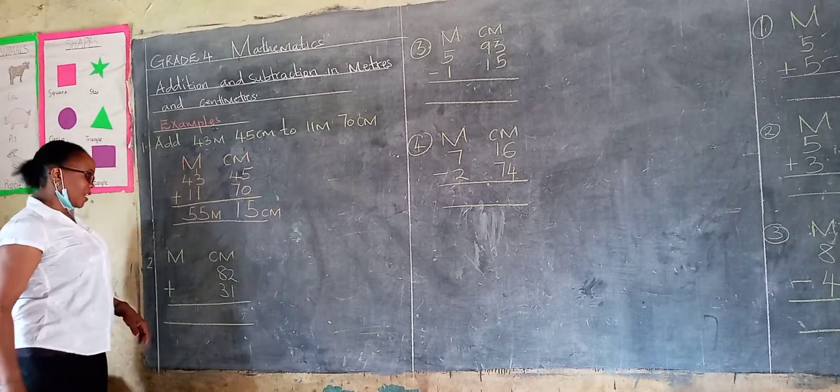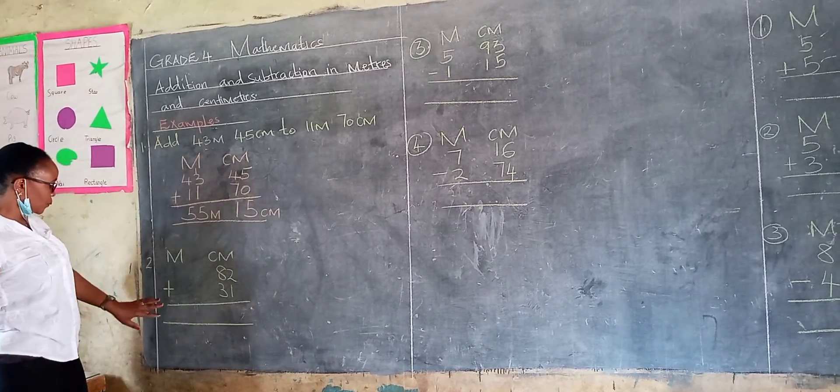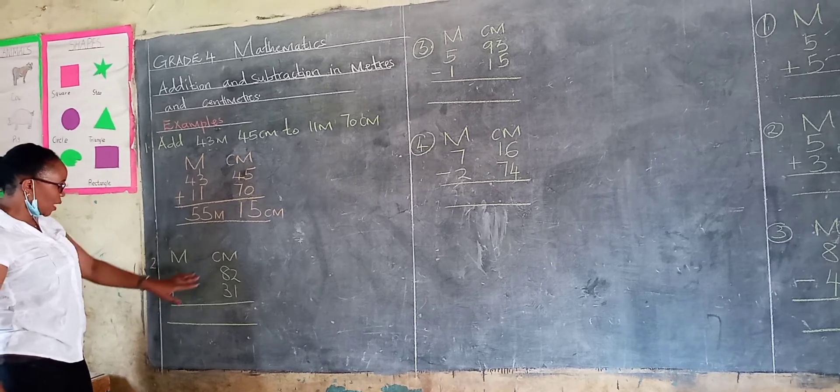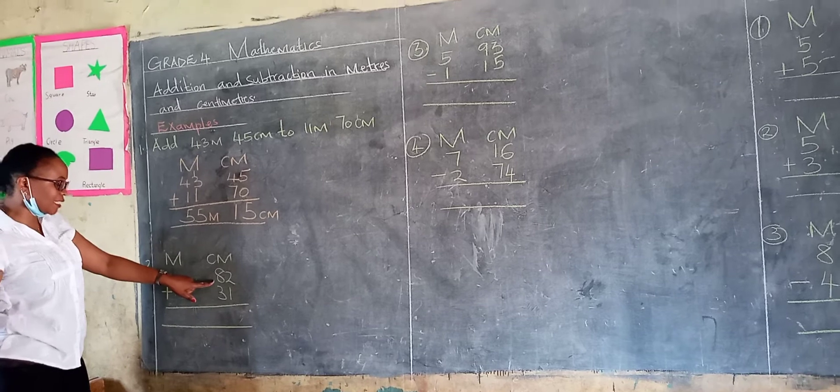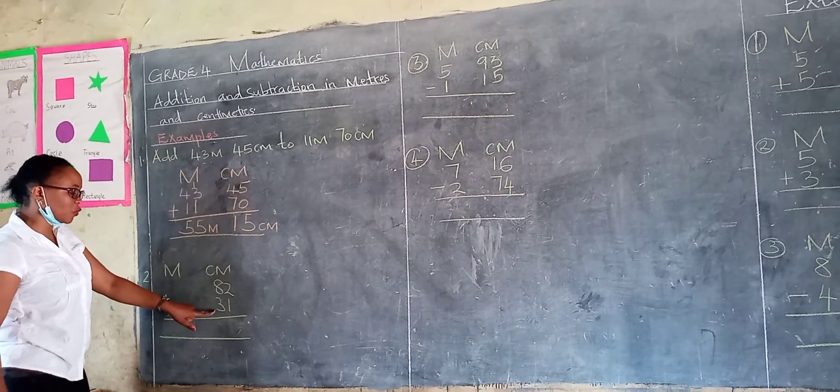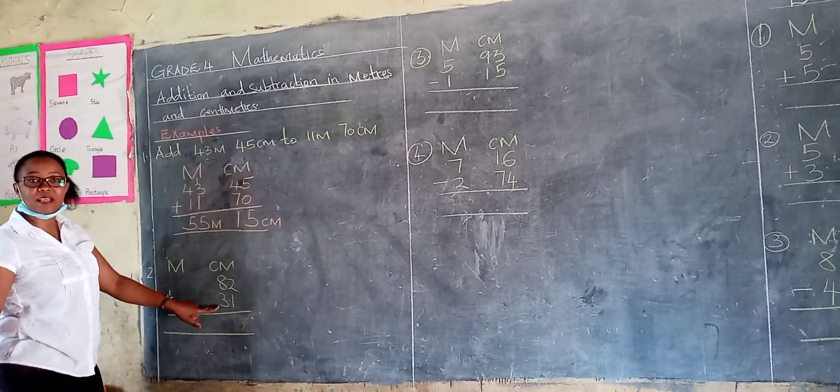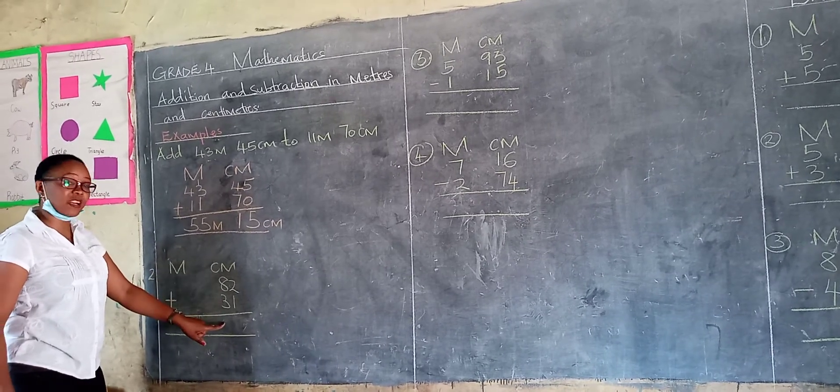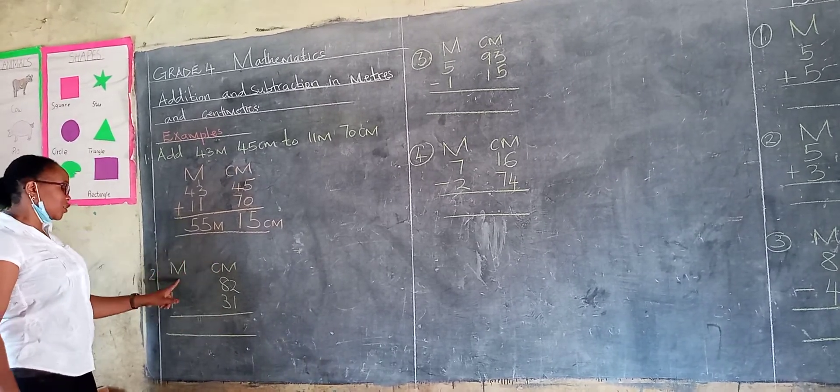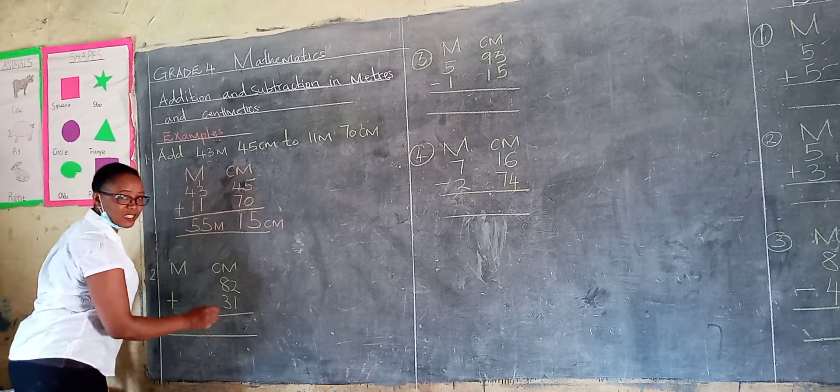Let's see the second example. In addition, we don't have meters. We have only centimeters. We have 82 centimeters. You add to that 31 centimeters. Learner, remember what we said, that if the answer is more than 100, you have to take away and you take it to the side of meters.